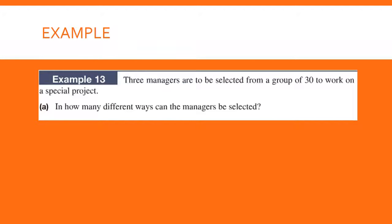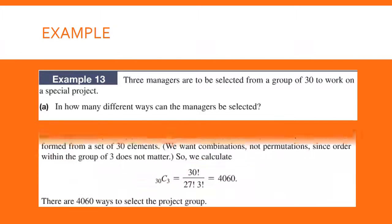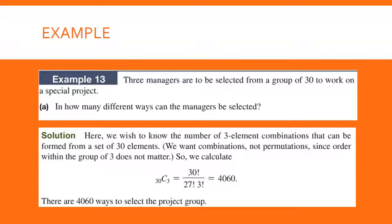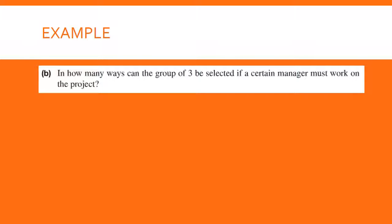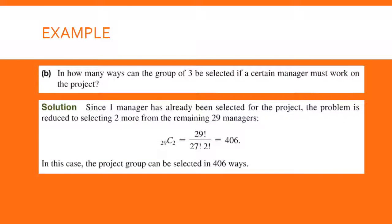Now try this problem — pause the recording, give it a try, and resume to check your answer. A combination of 30 items taken three at a time is 4,060. For the next part, one manager has already been chosen, so that takes one person out of the pool. Now we just need two more managers from the remaining 29, so we do a combination of 29 items taken two at a time, which gives 406.